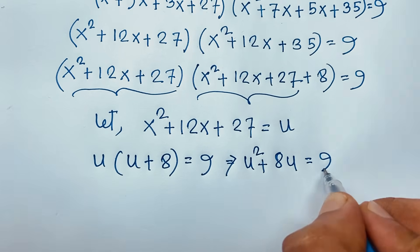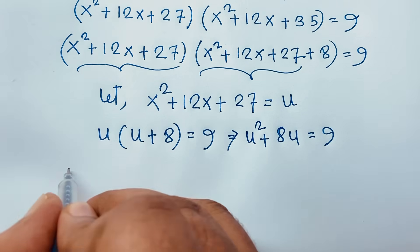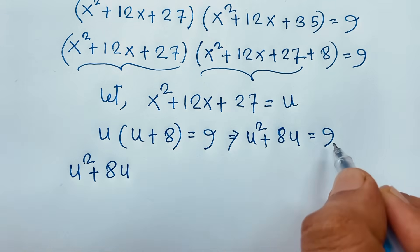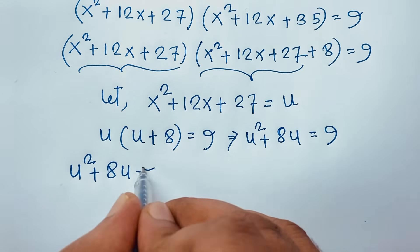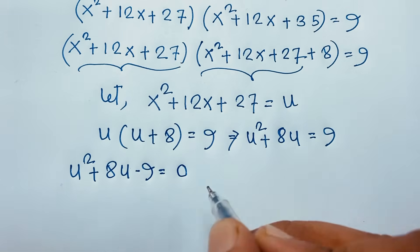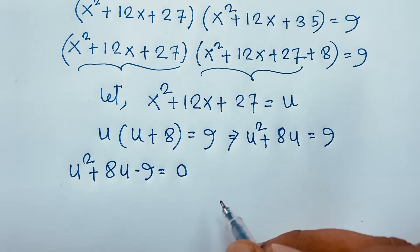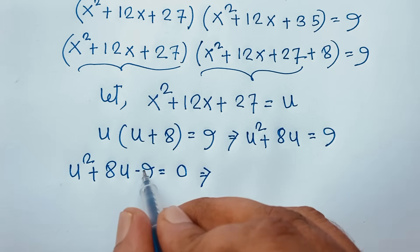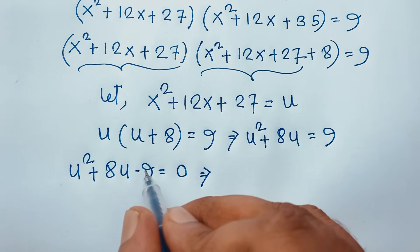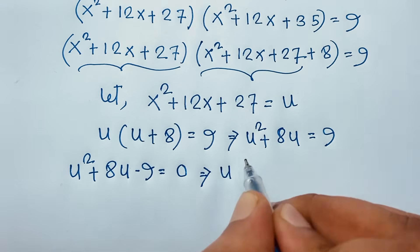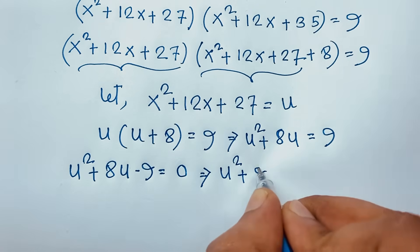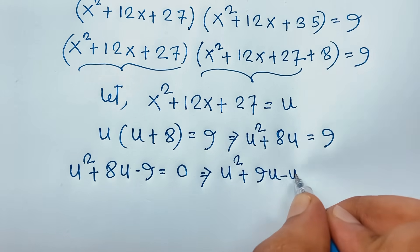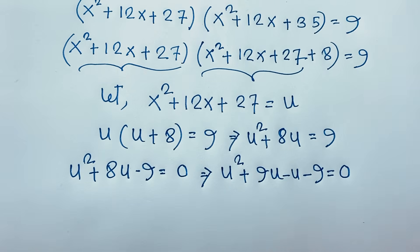This gives us the quadratic equation u² + 8u - 9 = 0. To factor, we find two numbers that multiply to -9 and add to 8: that is 9 and -1. So we write u² + 9u - u - 9 = 0.